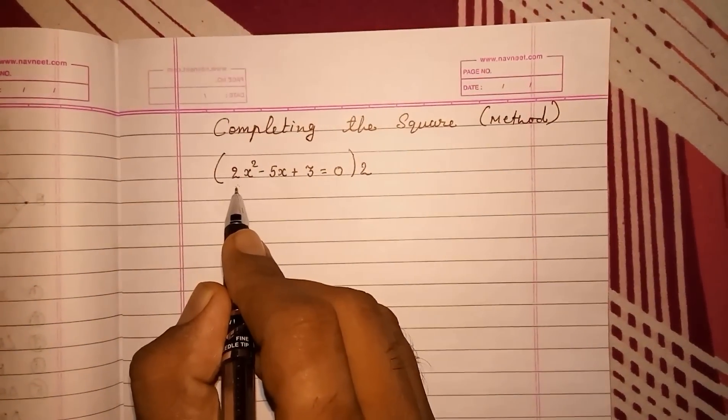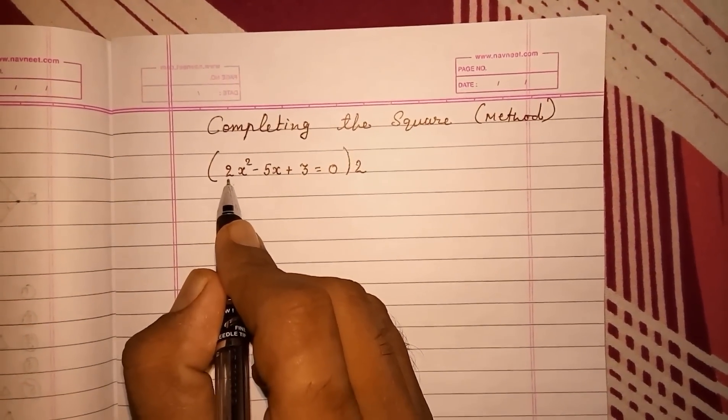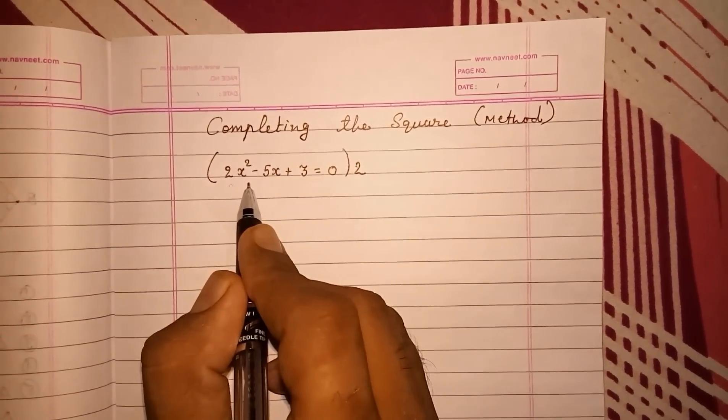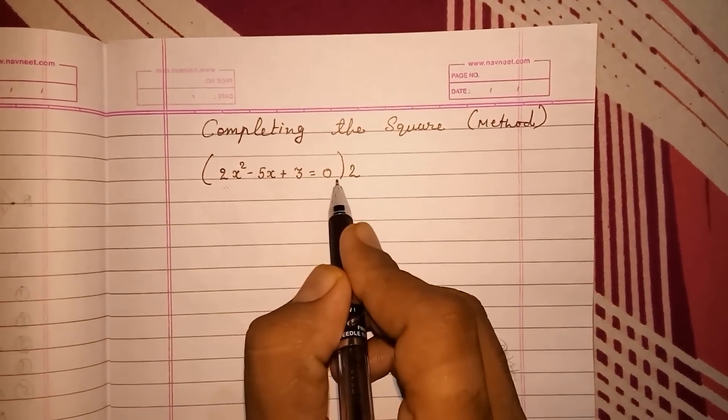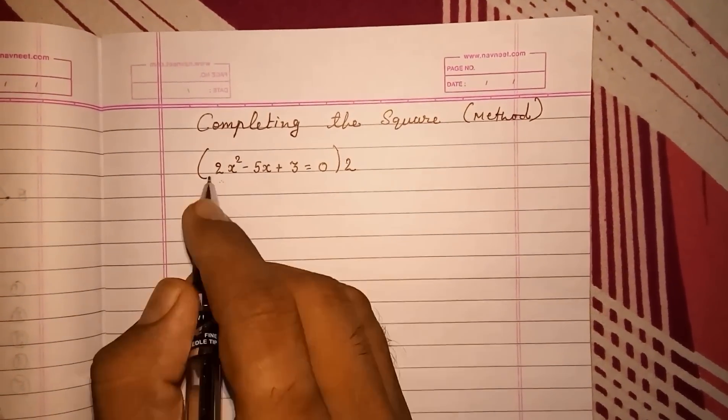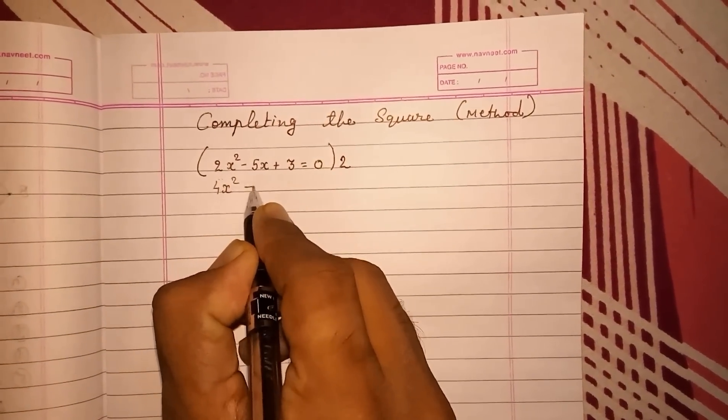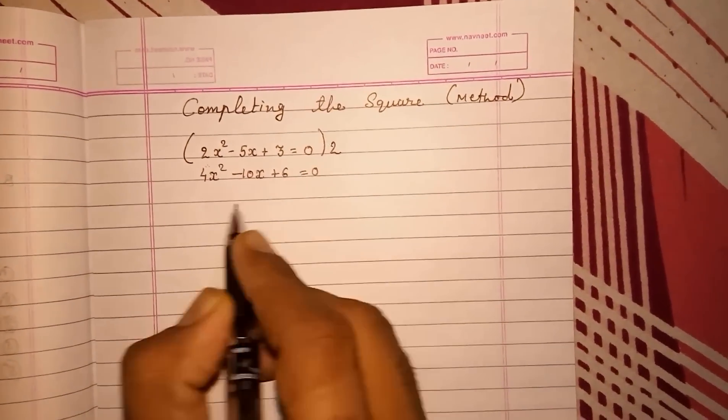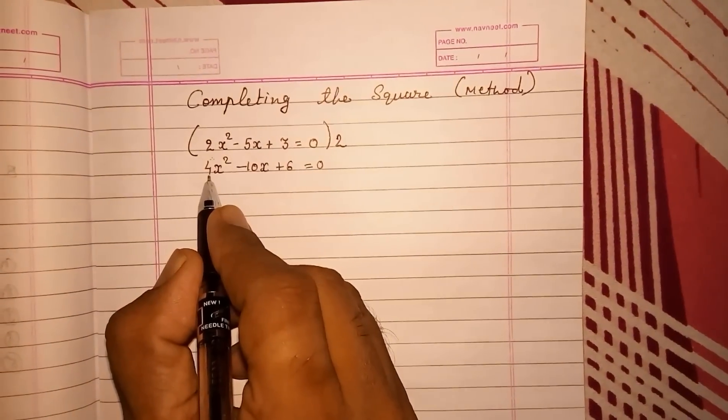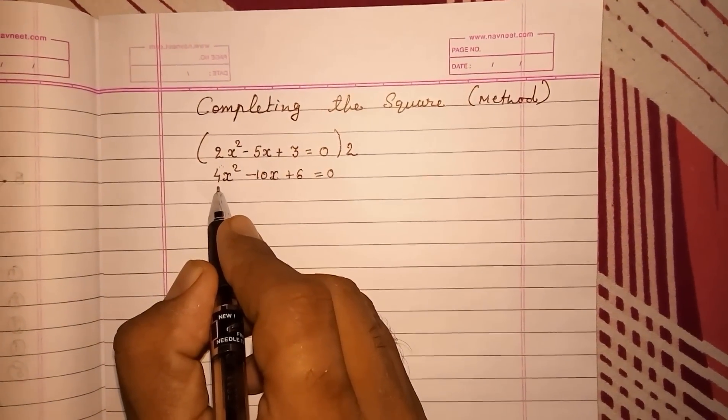We can do by division also. If I divide all numbers by 2, then this 2 will be removed and we only get x square. Then also we can solve. But I will do by multiplying. Now multiply 2 with all the numbers. It will be 4x square minus 10x plus 6 is equal to 0. Now the first number is a perfect square, so we can start solving it.